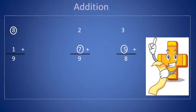The last one, we have 3 plus 5. Which one is the greater number? 5 is greater than 3. Let's circle the 5. Count on 3 times: 6, 7, 8. The sum is 8.